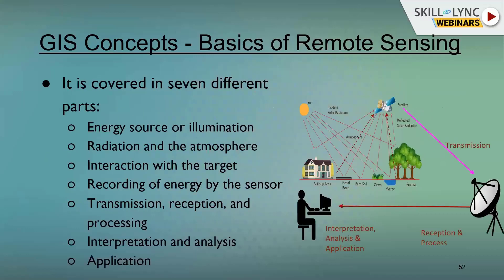How does it work? Looking at this image, there is a satellite up there recording information with the help of the sun — the ultimate source of energy. The sun gives us rays that carry electromagnetic spectrum energy. There are UV rays, gamma rays, X-rays, visible rays, and many more. Only the visible rays are what the human eye can actually understand or see.